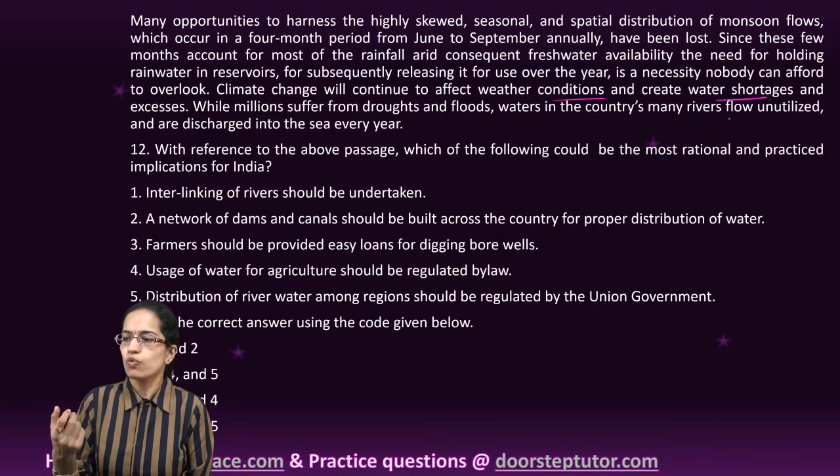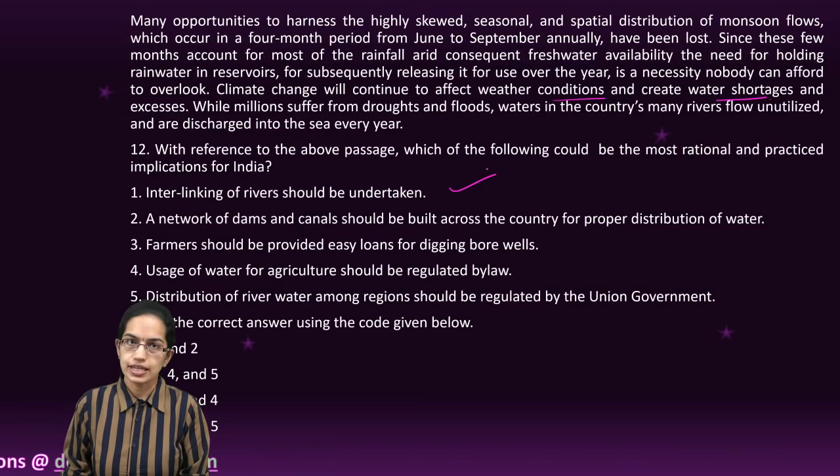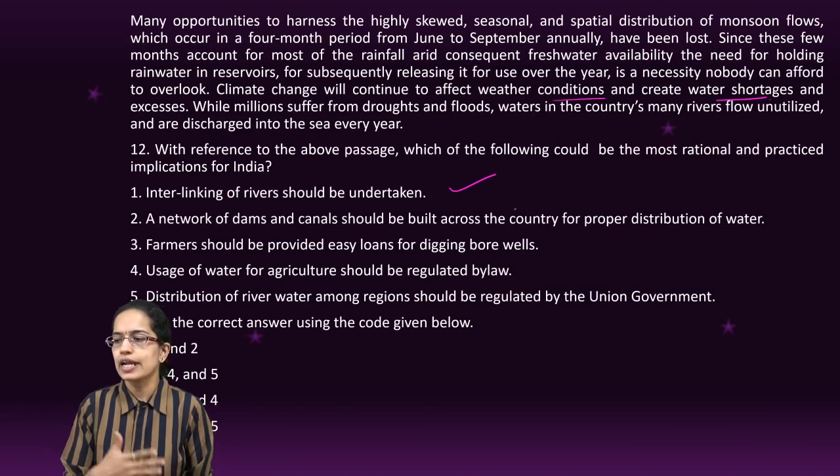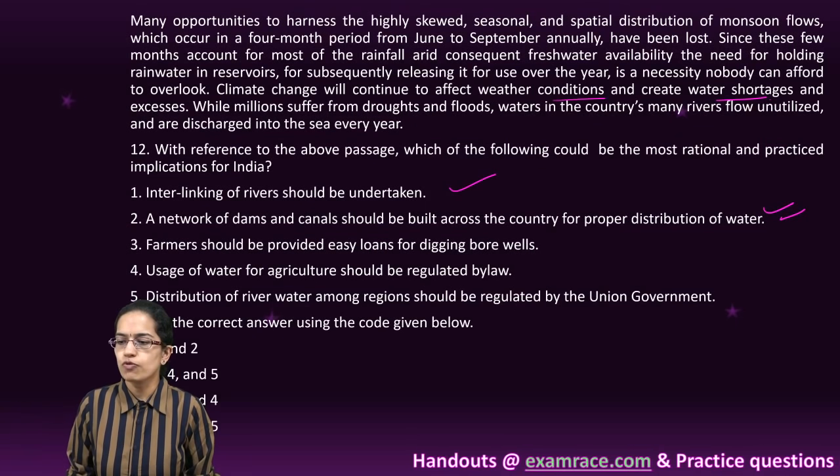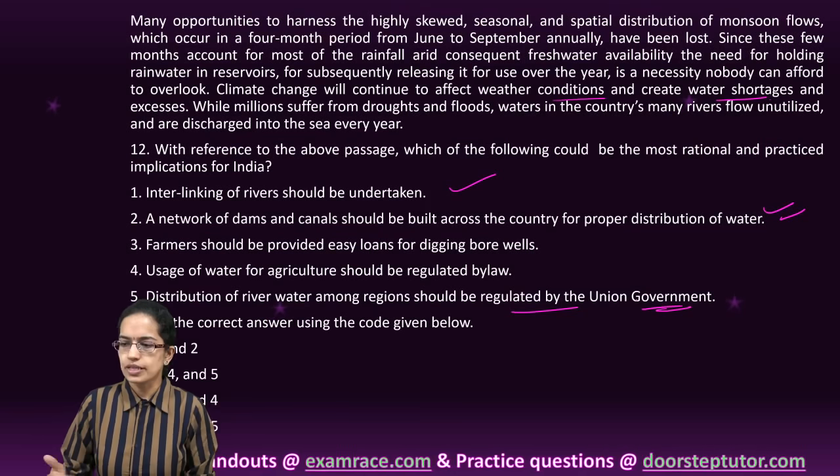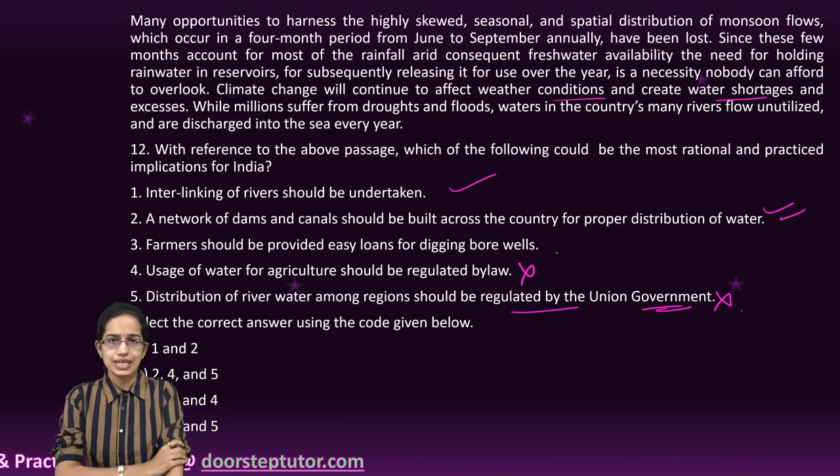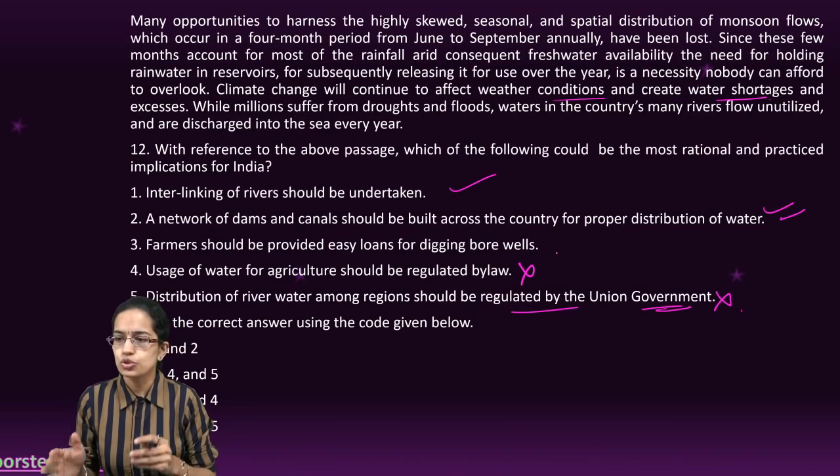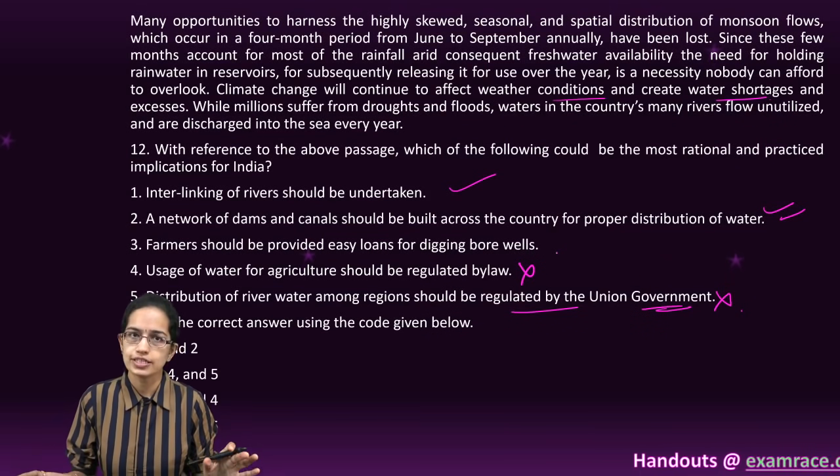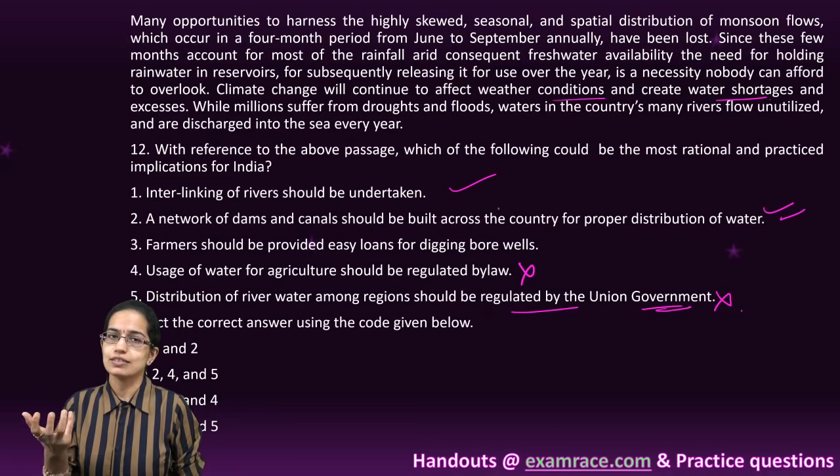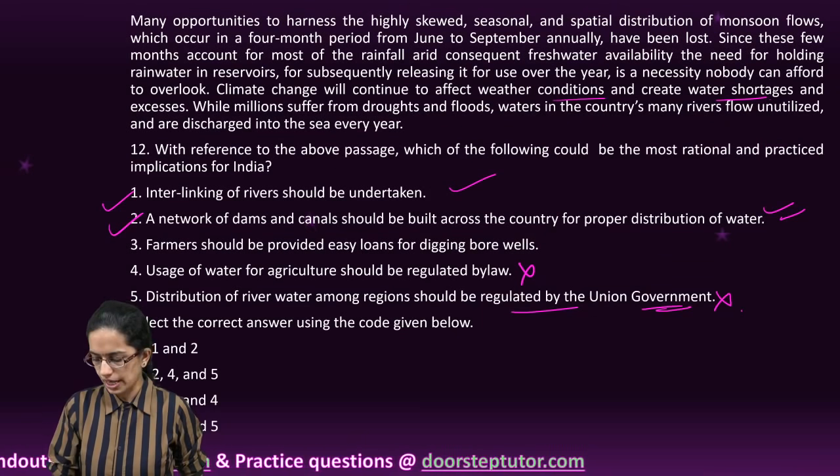The next passage talks about changes in the rainwater system and climate change affecting weather conditions, creating water shortages. What's the best option for a country like India? The best option would be interlinking rivers and creating a network of dams for proper distribution of water. We're not talking about regulation by the union government. The idea is to have water throughout the season and avoid unutilized water. So 1 and 2 are the right options.